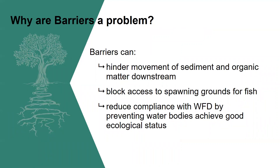So why are barriers a problem? The natural process of a river includes the movement of sediments and organic matter. A river transports and deposits sediment, which is important for aquatic habitats. Deposition can prevent erosion further downstream and a barrier can hinder the movement of sediment. A barrier also prevents fish species from accessing spawning grounds upstream, as various fish can't transition past a barrier due to high or low flow, the height difference, and things like that.